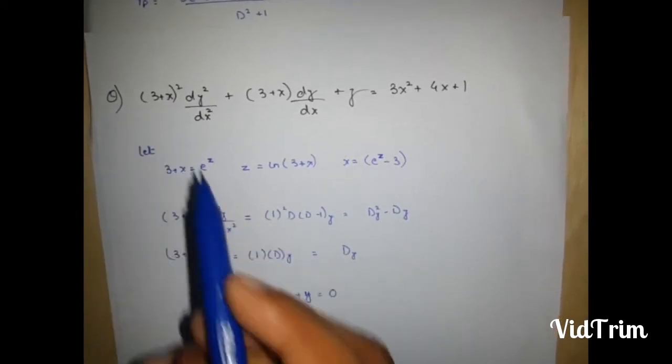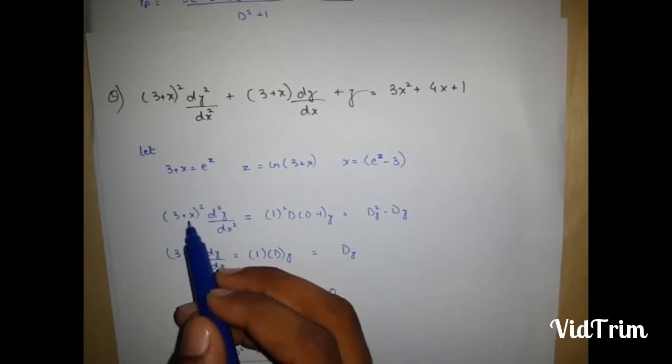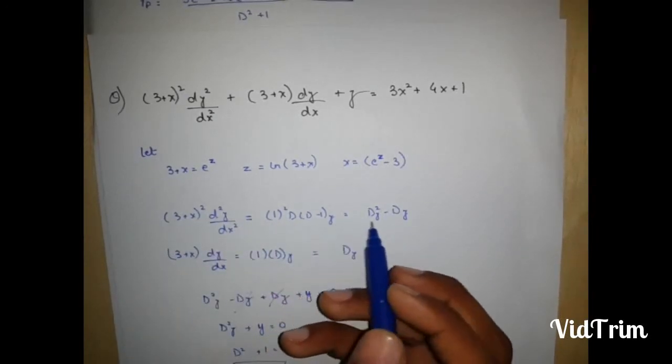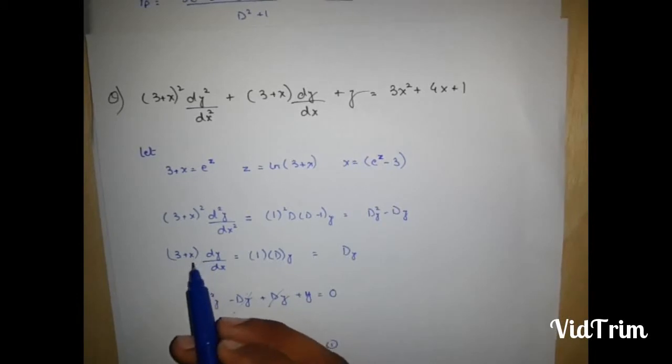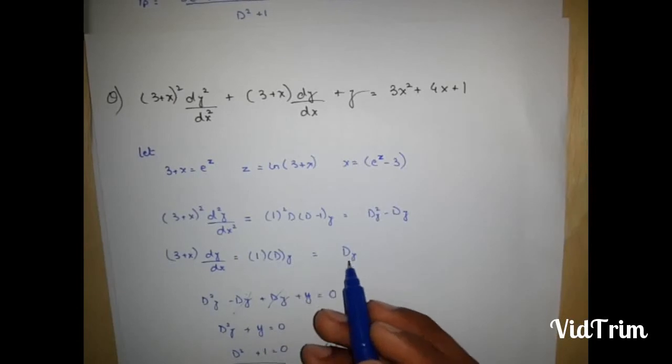Now this is rpx, so b is 1, so 1 square d d minus 1 into y is equal to this, and here 1 to the power 1 dy is equal to dy.